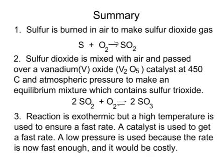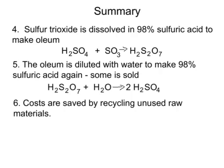The sulfur trioxide that's made is removed from the mixture and dissolved in 98% sulfuric acid to make a chemical called oleum. That oleum is then diluted with water to make 98% sulfuric acid again, but more of it — some is sold and some is put back into the process to have more sulfur trioxide dissolved in it. Like in most industrial processes, any unreacted sulfur dioxide or air is recycled back into the process to save costs, and automation is used wherever possible to save on the wages bill.